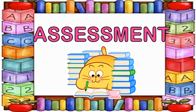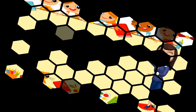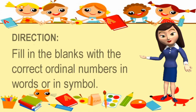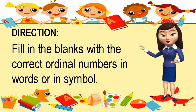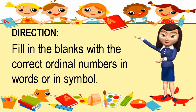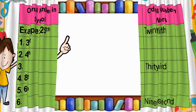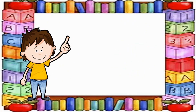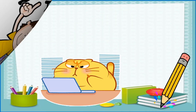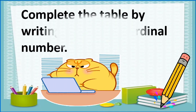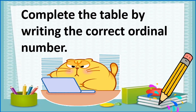Now let us move on to the assessment — let us find out if we learned our lesson for today. Fill in the blanks with the correct ordinal numbers in words or in symbols and write your answer on your paper. Your teacher will give you a separate sheet of paper for this. Additionally, here are extra activities that will improve your understanding: complete the table by writing the correct ordinal numbers.